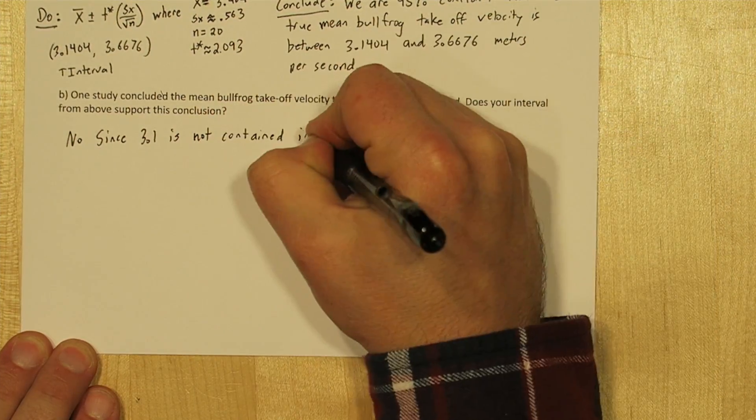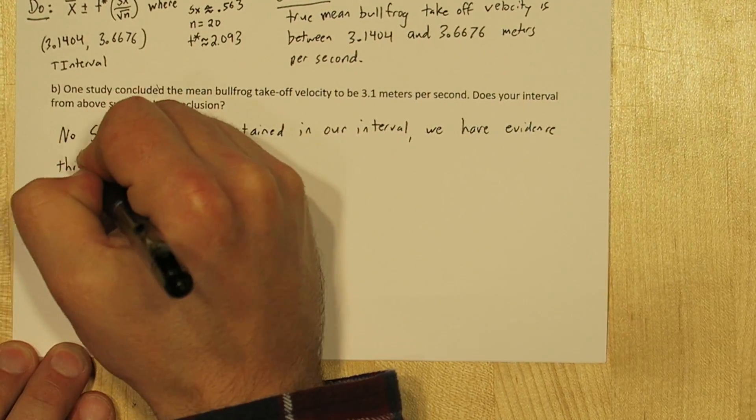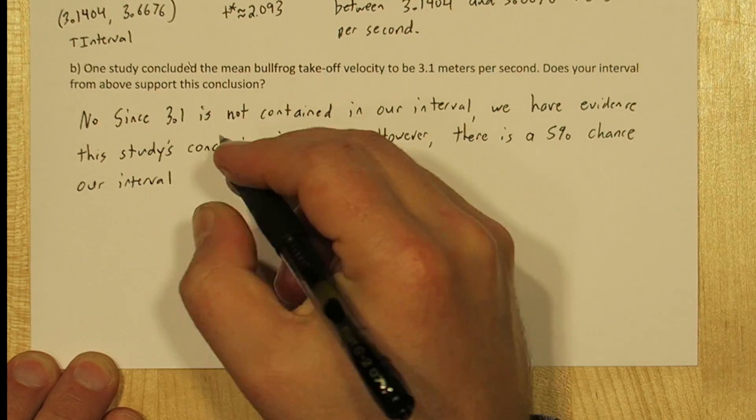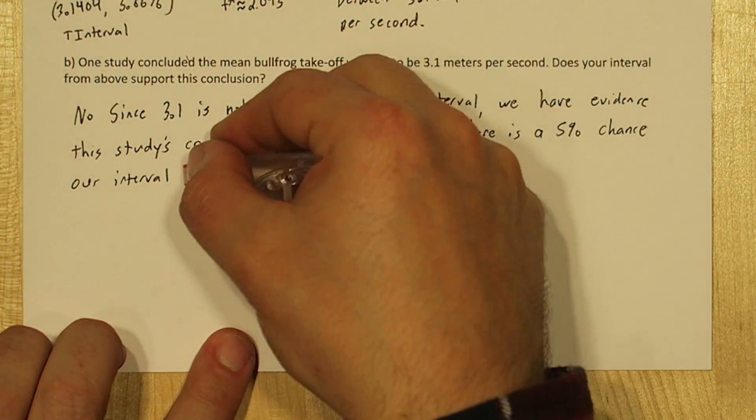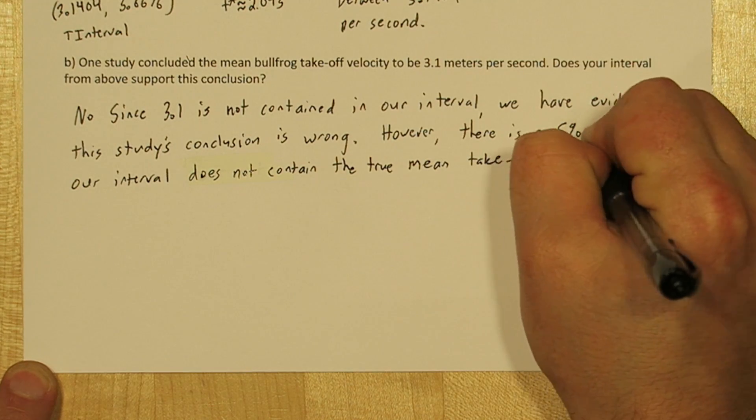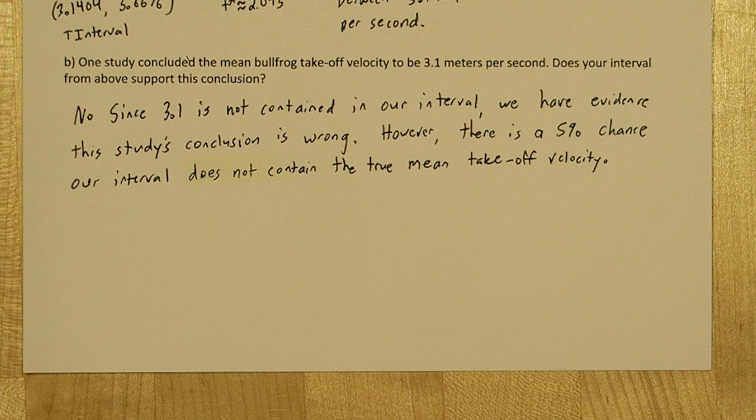For part b, notice 3.1 is not a value that's within our interval. So, we'll say no, we have evidence this study's conclusion is wrong. However, there is a 5% chance we produced an interval that didn't capture the true parameter value. But it's more likely the study is wrong.